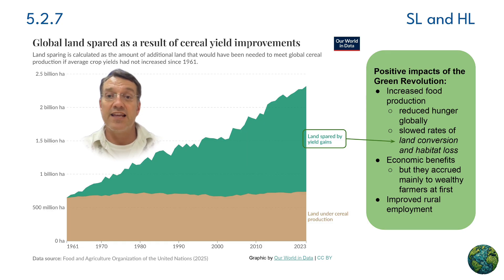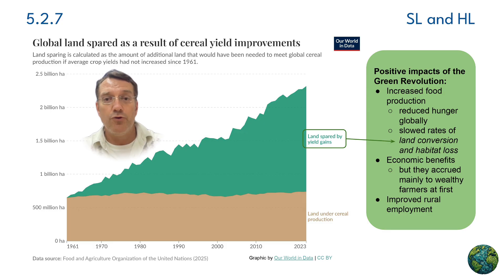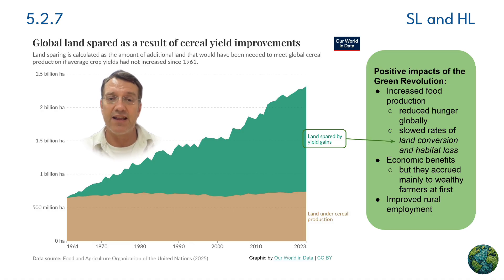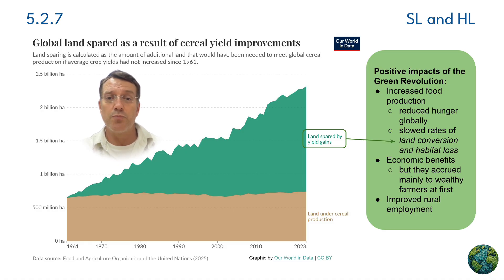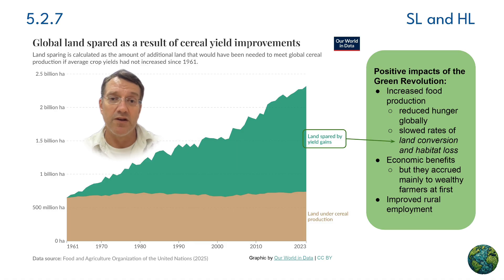The Green Revolution had significant impacts. Most importantly, it increased food production, which reduced hunger globally, and it actually slowed rates of land conversion and habitat loss because we could grow more food on the existing farmland. This graph shows land spared as a result of cereal yield improvements. Without these productivity gains, we would have needed to convert an additional 2.3 billion hectares to agriculture. The revolution also brought economic benefits and improved rural employment, although those benefits initially accrued mostly to rich farmers who could afford the new technology.